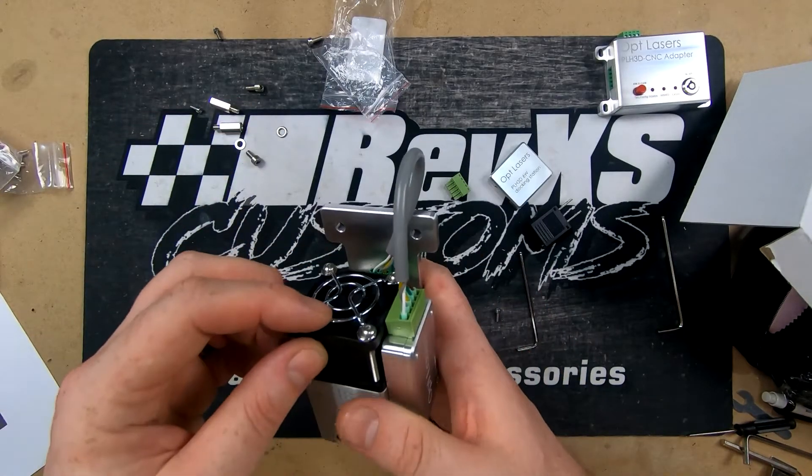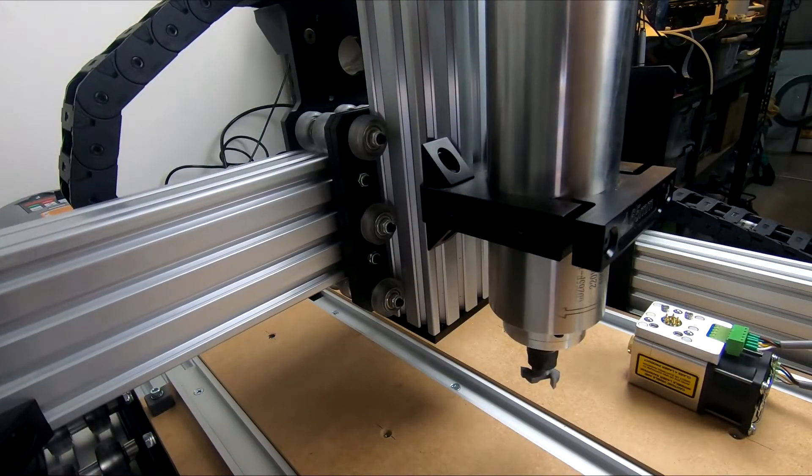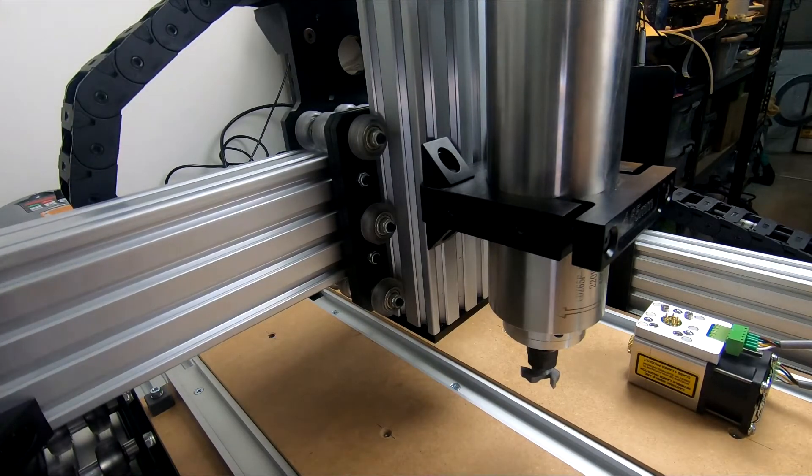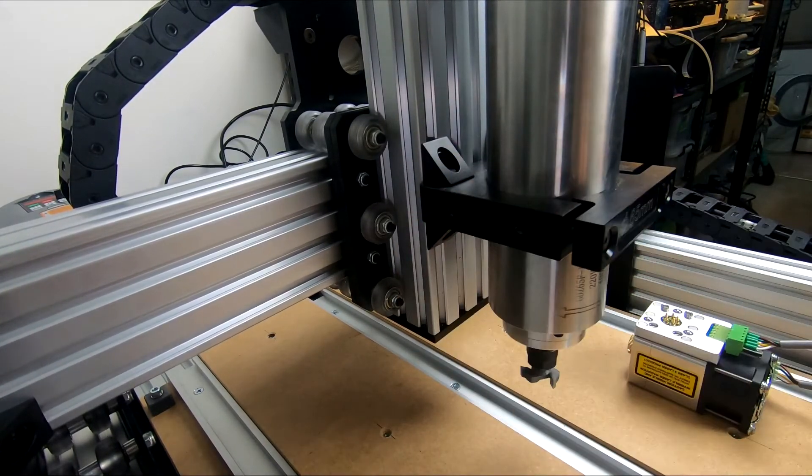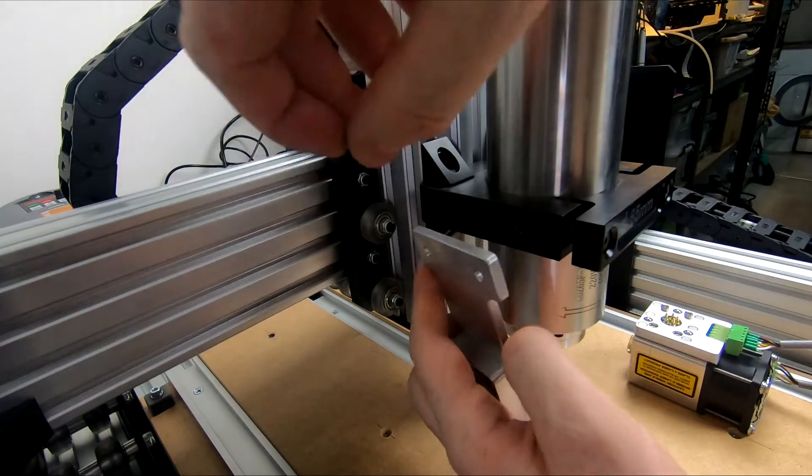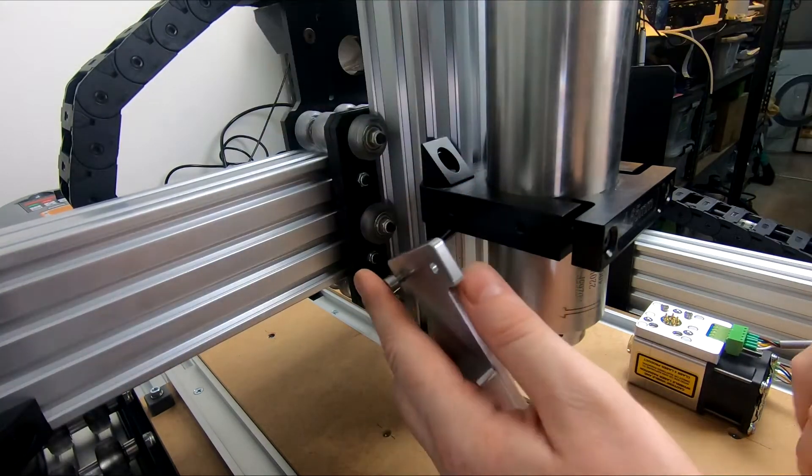So let's get this one bolted up on the machine. All right, so to attach this to the side of your spindle, all you're going to do is pick up there's two holes off here. That's as simple as bolting this plate to it.